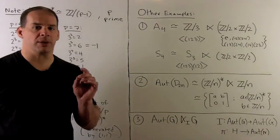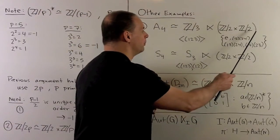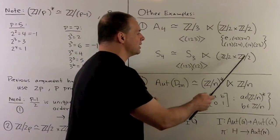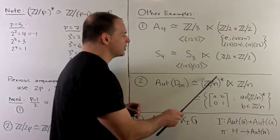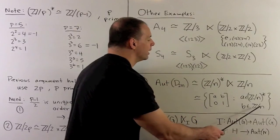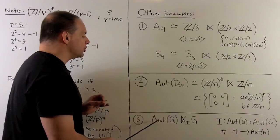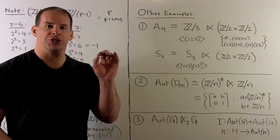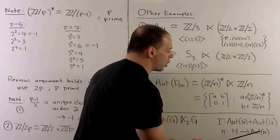For other examples of semi-direct products: A4 can be written as a semi-direct product of Z mod 3 with Z2 cross Z2. Likewise, S4 can be written as a semi-direct product of S3 with Z mod 2 cross Z mod 2. One example we've seen: Aut(D sub 2N) is isomorphic to Z mod N star semi-direct product with Z mod N — that's a little easier to think about in terms of matrices. And this is a special case of the most abstract version: a semi-direct product of Aut(G) with G itself, where our homomorphism pi is just the identity map sending Aut(G) to Aut(G).